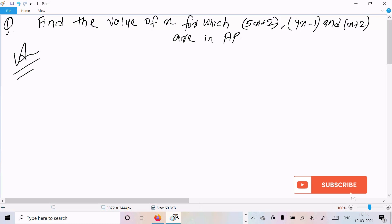So here we need to find the value of x. The given AP is 5x plus 2, next is 4x minus 1, and finally x plus 2.